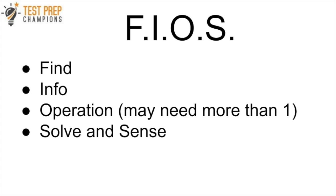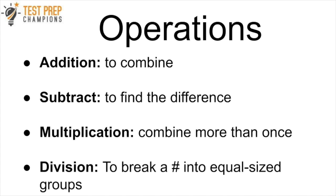As a quick review, here are the strategies for the operations. You want to use addition to combine numbers, and subtraction to find the difference between numbers. Multiplication is really a repeated addition, so it's used when you have to combine numbers more than once — you'll usually be given one of something and asked to find many. Division is used to break a number into equal-sized groups, and you'll often be given many things and asked to find just one from them.